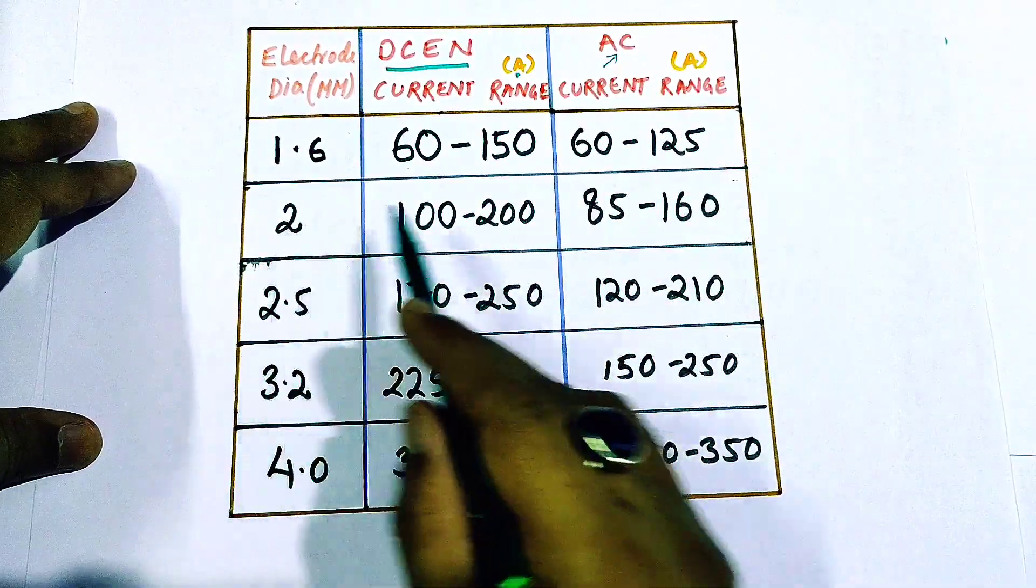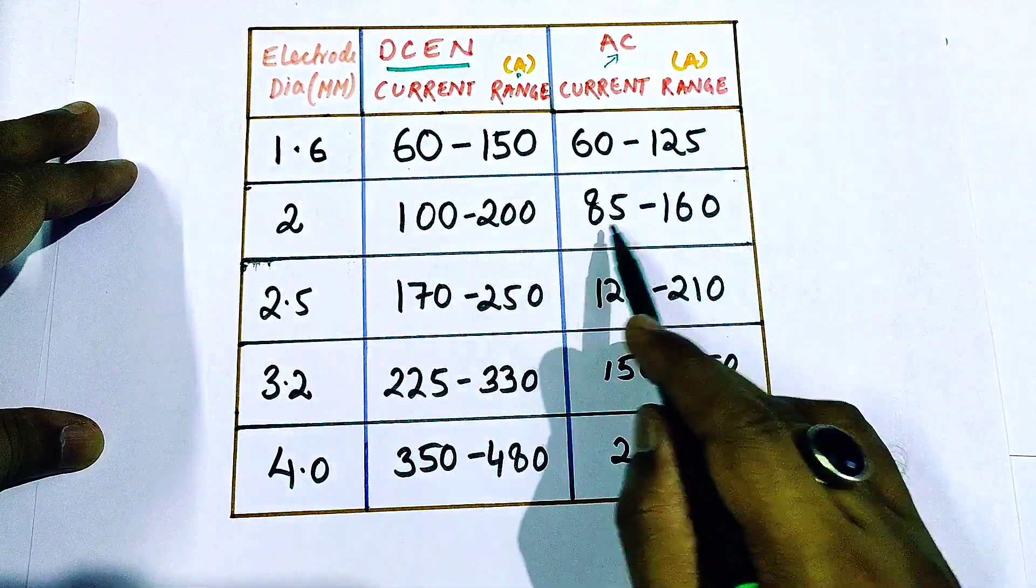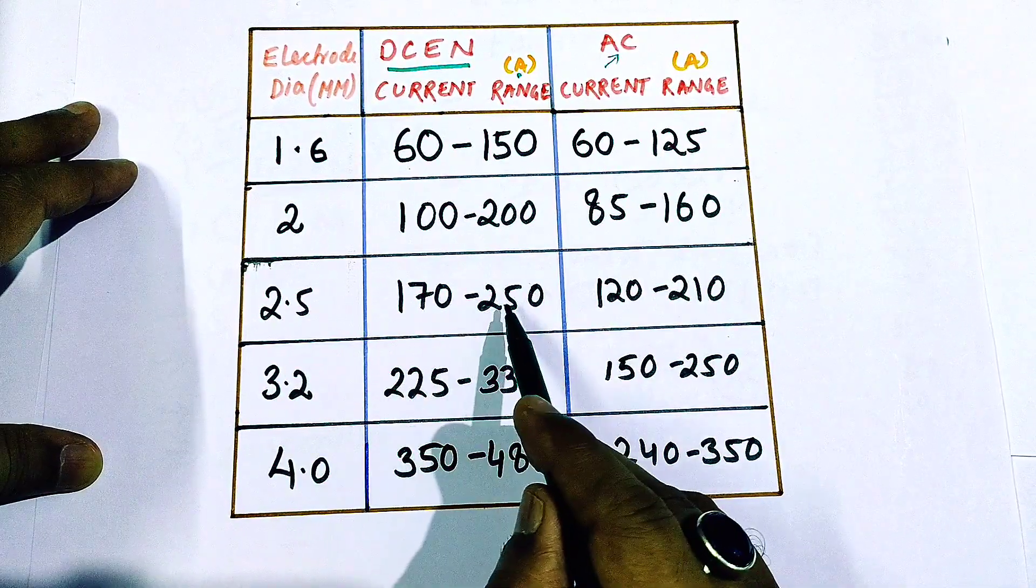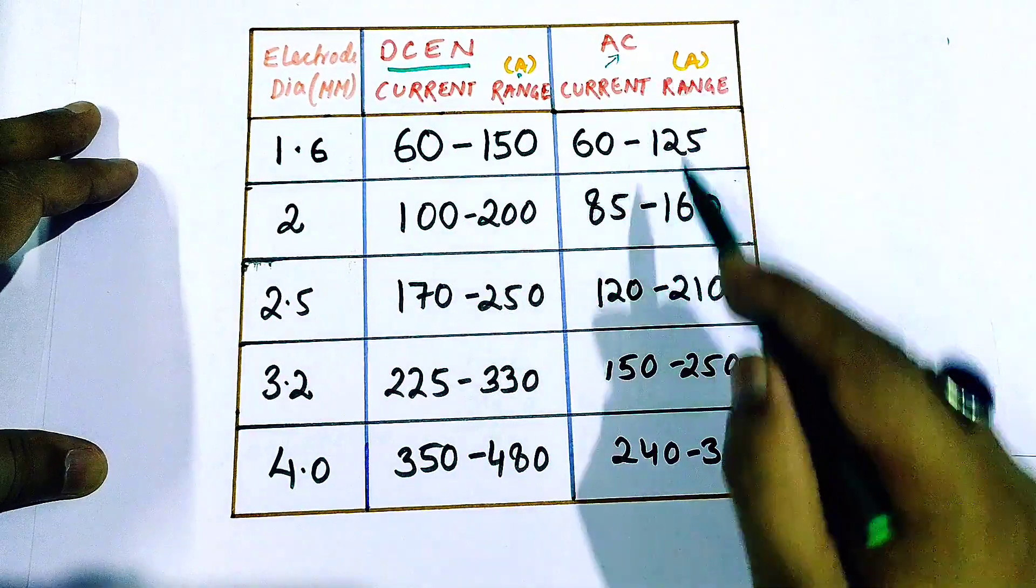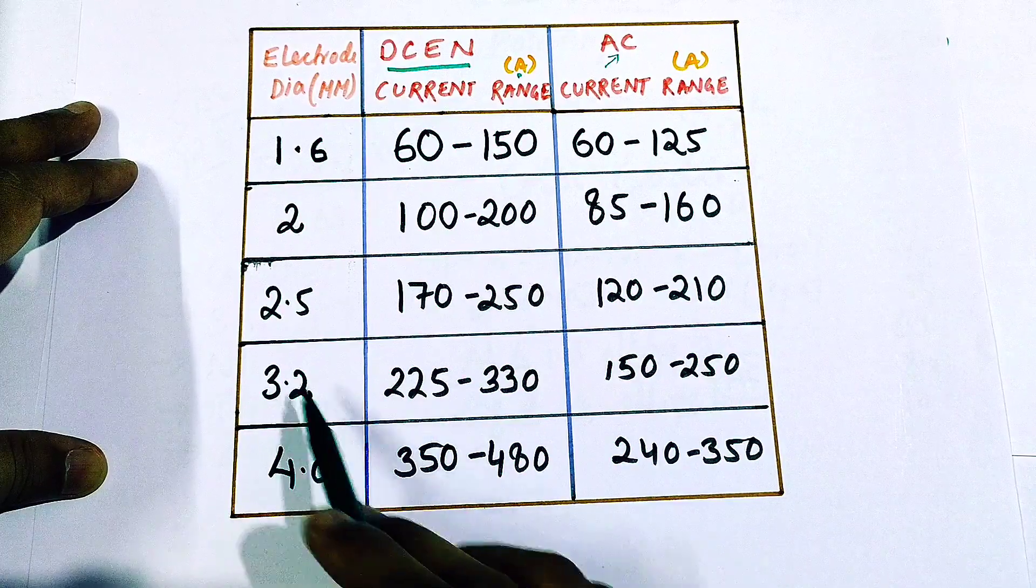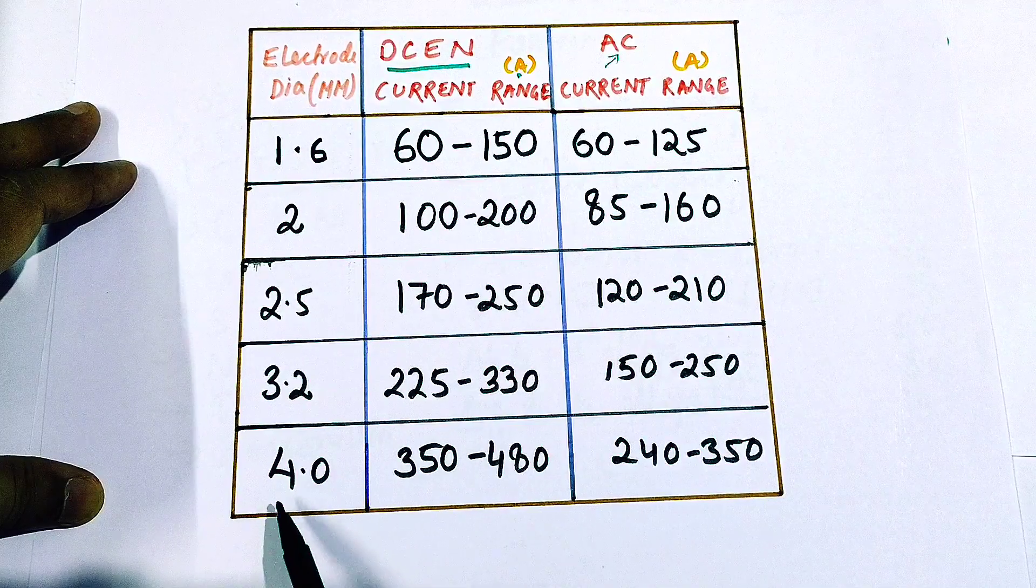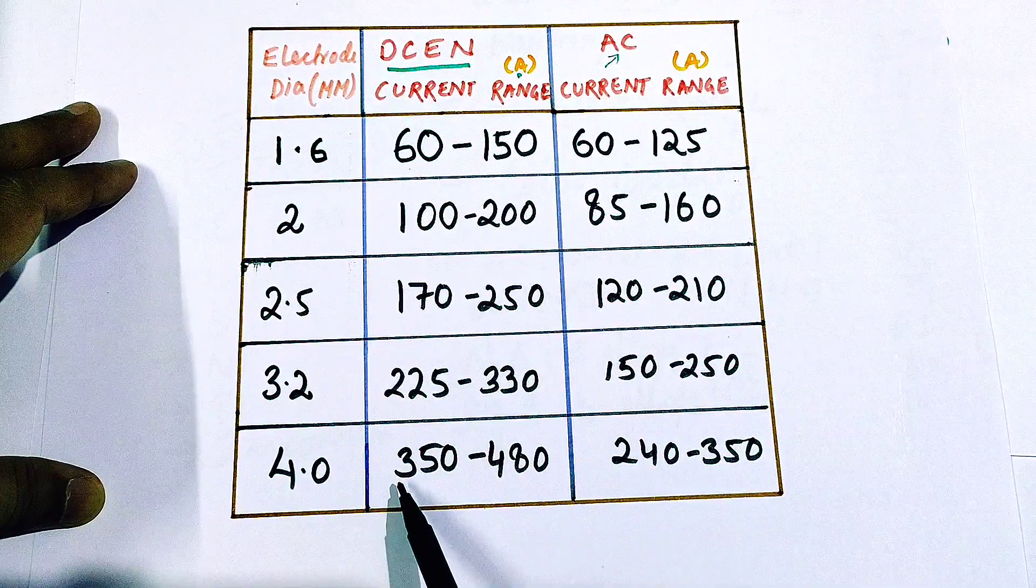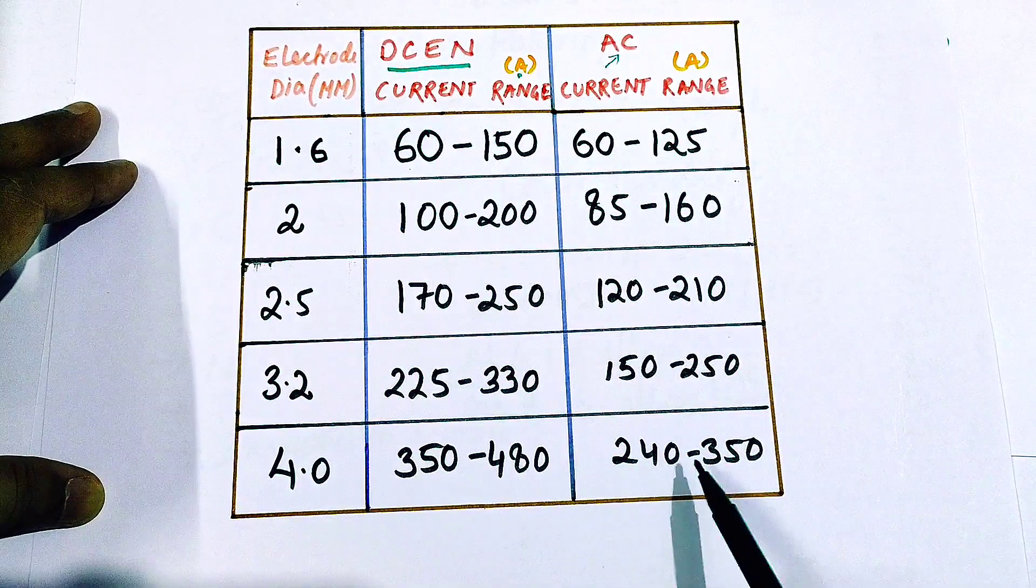For 2 mm diameter, DCEN 100 to 200 is the range, and for AC 85 to 160. Again, for 2.5 mm diameter, the range is 170 to 250 for direct current electrode negative polarity, and for AC it is 120 to 210. For 3.2 mm diameter, it is 225 to 330, and for AC 150 to 250. Again, for 4.0 mm diameter, for DCEN it is between 350 to 480 amperes, and for AC 240 to 350.